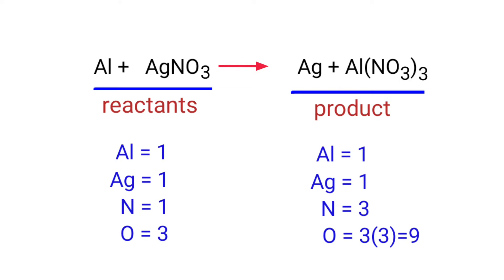On the products side, there are one aluminum atom, one silver atom, three nitrogen atoms, and nine oxygen atoms.